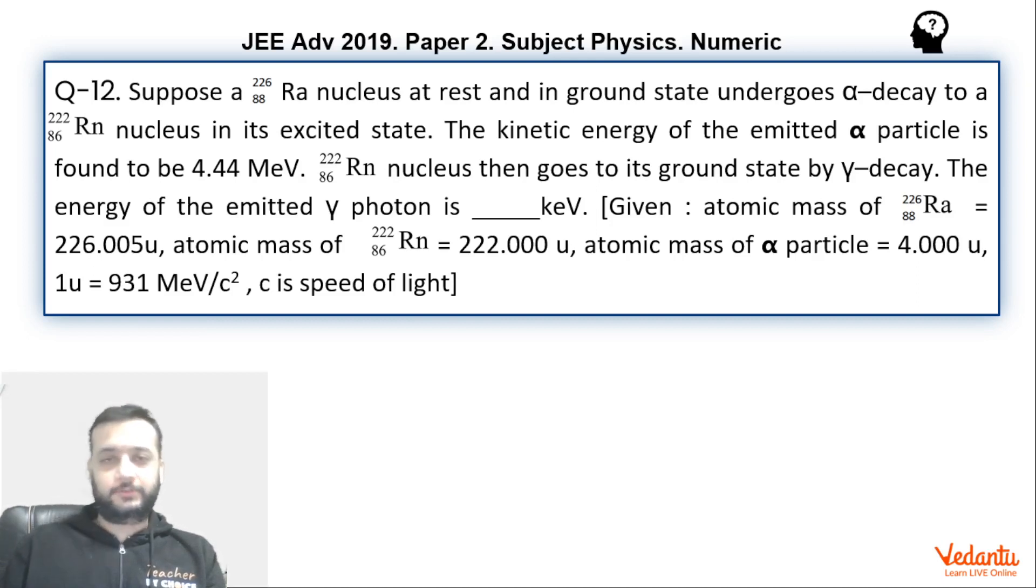Let's see what's given in this question. Radium is a nucleus which is at rest and it undergoes alpha emission by emitting radon in the excited state. This is a key word mind you. The kinetic energy of the alpha particle thus formed is 4.44 million electron volt or mega electron volt. The radon further goes into gamma ray emission and it comes to the ground state by emitting a gamma ray photon.